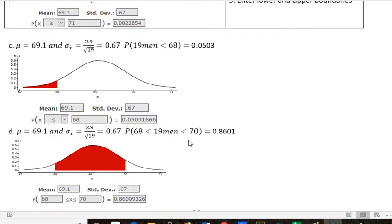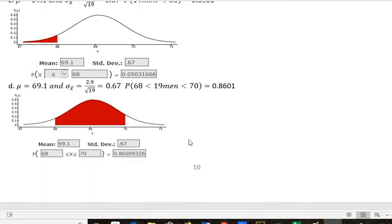And then the last one is, what would be the probability that 19 men being between 68 and 70 inches tall? And that covers this middle piece. So we would expect that most men would be within this two inch range, which isn't a very big range. And these numbers that I used, I found on the internet, I think it's pretty accurate. So what that's saying is between the heights of 5'8" and 5'10", 86% of the male population is going to fall within those two values.